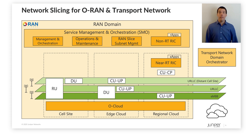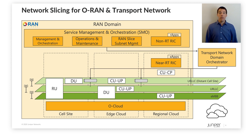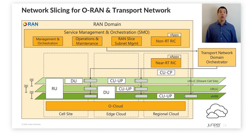As we can see, the RAN network functions can be deployed at different locations in the telco cloud depending on the slice characteristics. For example, functions can be placed at the cell site, edge cloud, or regional cloud. Then, the ORAN SMO interfaces with the transport network orchestrator for establishing inter-cloud connectivity and fulfilling the end-to-end SLA of the slices. Juniper's vision is to provide end-to-end network slicing, but for this demo we will focus on transport slicing.